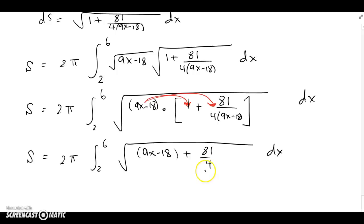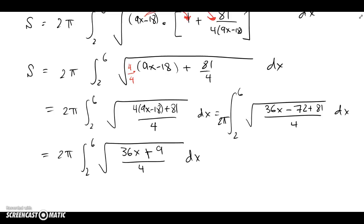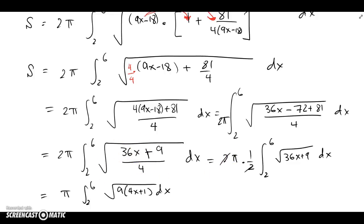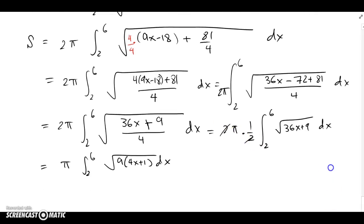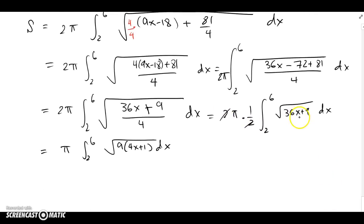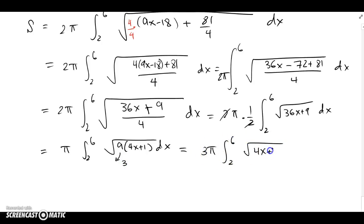Getting a common denominator of 4 and distributing, then combining the numerator, things look much better. Splitting the radical into top and bottom and pulling the half outside, we can also factor out a 9, which comes out as a 3. So we have 3π out front, and the integral from 2 to 6 of sqrt(4x + 1) dx. It looked really ugly at the beginning but after some algebra it's not bad at all.